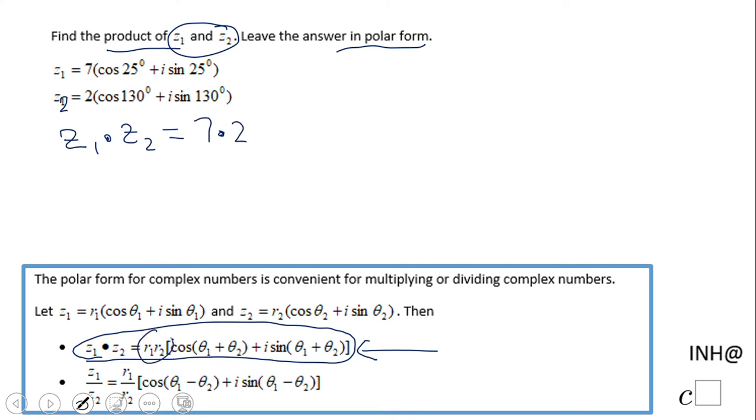You multiply the r's, open a parenthesis, cosine of - and look here what we need to do: add the angles, 25 plus 130, and i sine of the same thing, 25 plus 130.